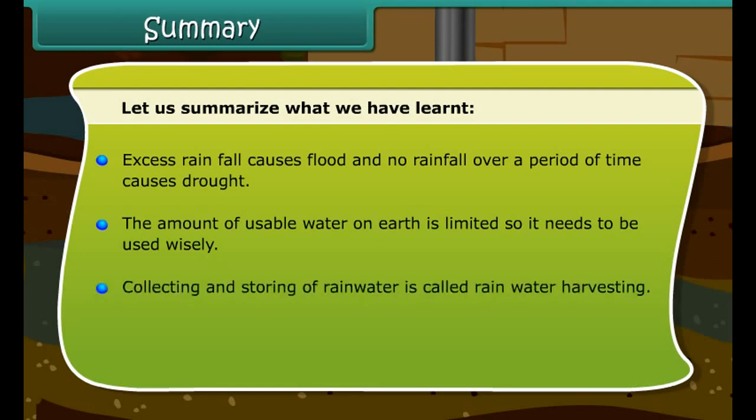Let us summarize what we have learned: excess rainfall causes floods and no rainfall over a period of time causes drought. The amount of usable water on Earth is limited, so it needs to be used wisely. Collecting and storing of rainwater is called rainwater harvesting.